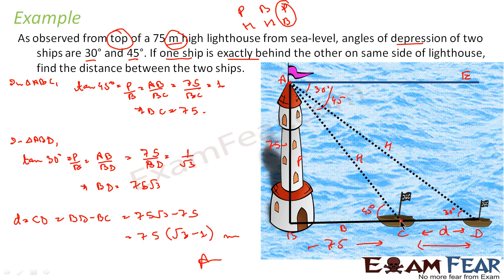That is the answer — the distance between the two ships is 75(√3 − 1) meters. It is very simple: just draw the triangle, use the given angles and one known side to find the other sides, and then find CD. The key is to understand the problem — observed from the top of a 75-meter lighthouse — take the top position, draw the angles of depression using a horizontal line, and you get this figure.